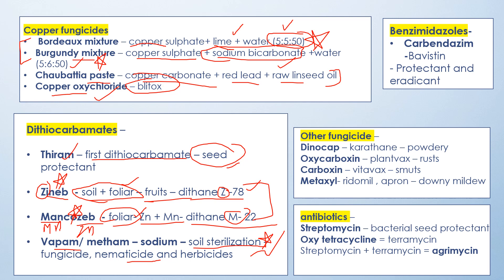Benzimidazole is very protective and eradicant. Dinocap, also known as Karathane, controls powdery mildew. Oxycarboxin is a plant wax fungicide and controls rust. Carboxin, known as Vitavax, controls smut. Metalaxyl, known as Ridomil or Apron, controls downy mildew.